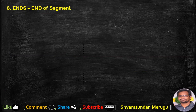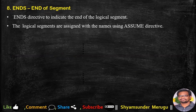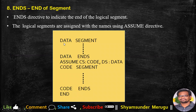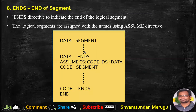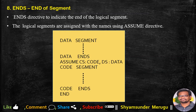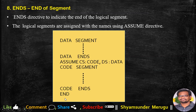ENDS stands for end of segment. The ENDS directive indicates the end of a logical segment. Logical segments are assigned names using the ASSUME directive. In a sample code, we have a data segment with certain code, then 'data ends' marks where that segment ends. Then ASSUME is used with CS for code and DS for data, followed by the code segment. The code segment ends with ENDS, and the entire program ends with END. Any instruction after END will be ignored and not considered for execution.